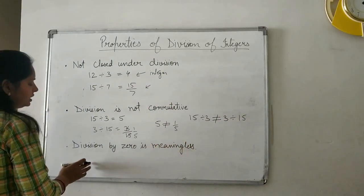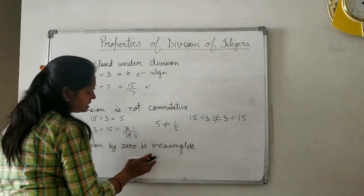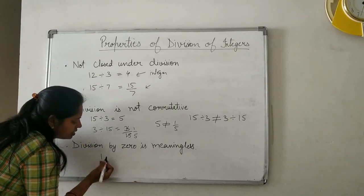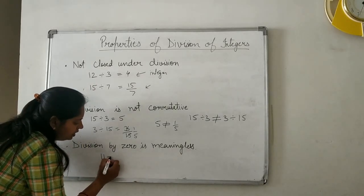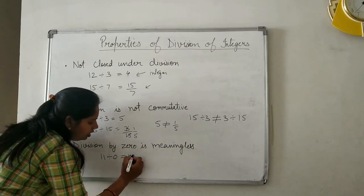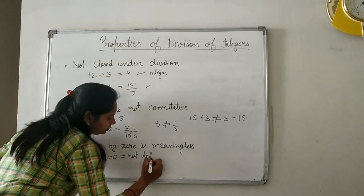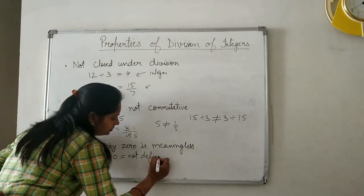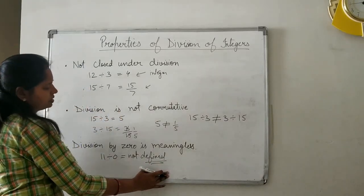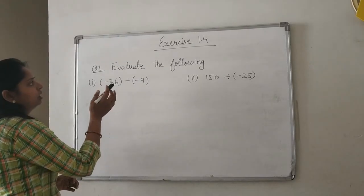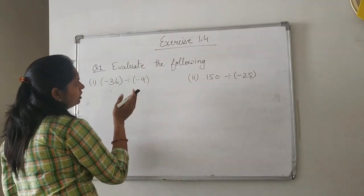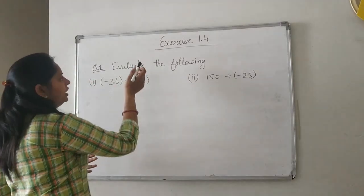Next, division by 0 is meaningless. If you divide, suppose 11 divided by 0, then it is not defined. So division by 0 is of no use.